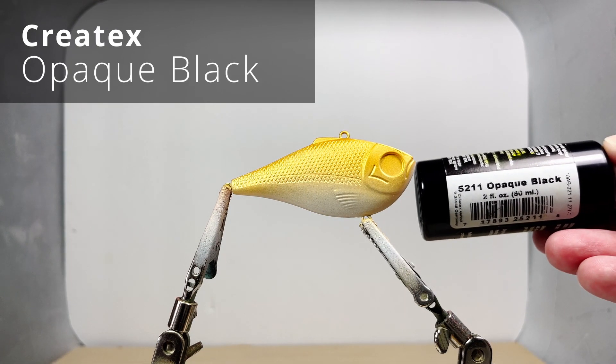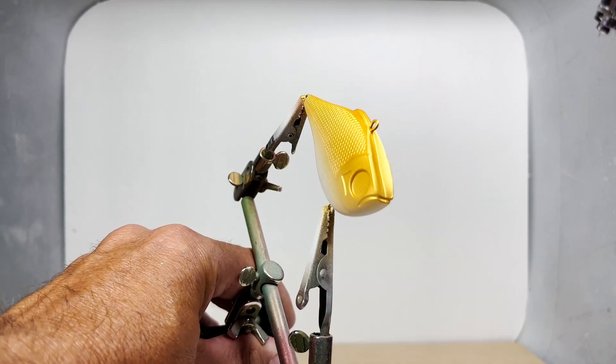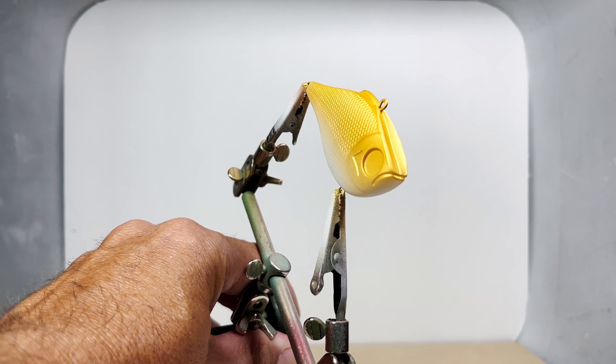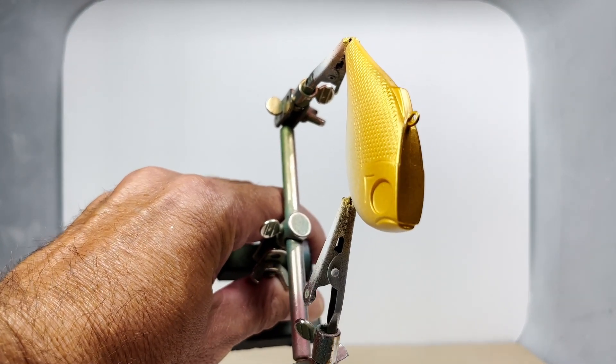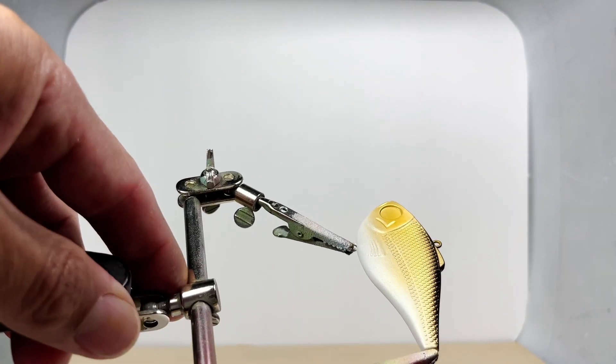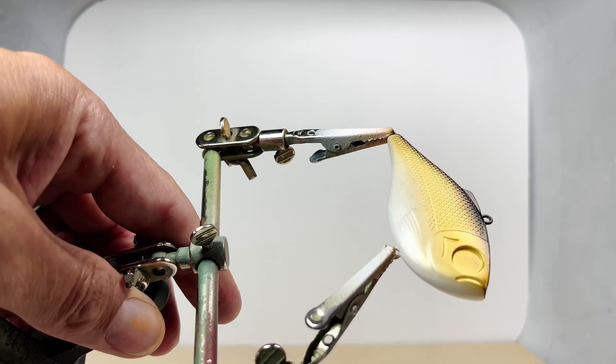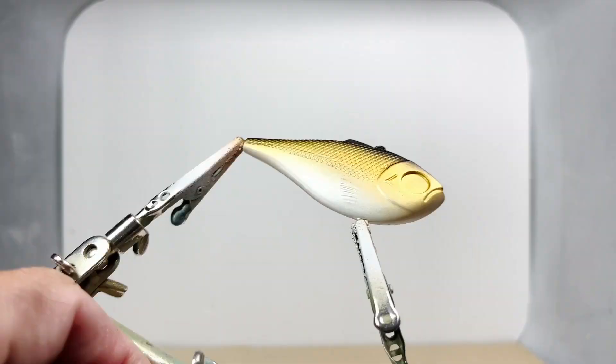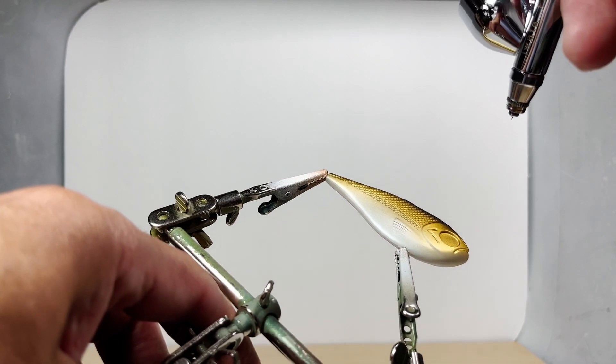I'll then layer opaque black over the back. This is a great lure pattern for a beginner. With opaque black still in the brush, I'll darken the eyes.